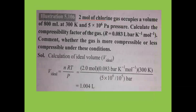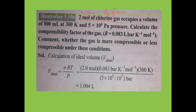Next problem: 2 moles of chlorine gas (Cl2). Gram molecular weight of Cl2 is 35.5 × 2 = 71 g/mol. It occupies a volume of 800 mL (convert: 800/1000 liters). Temperature is 300 K.